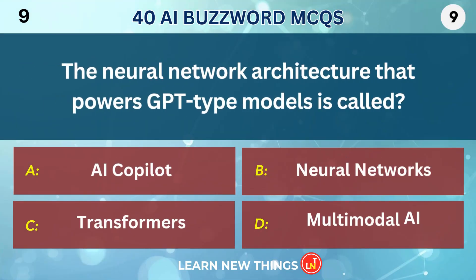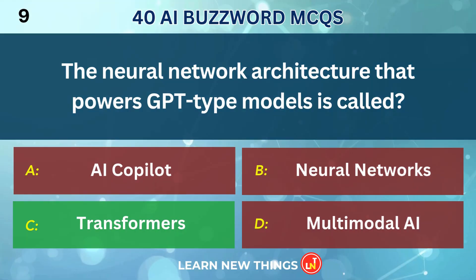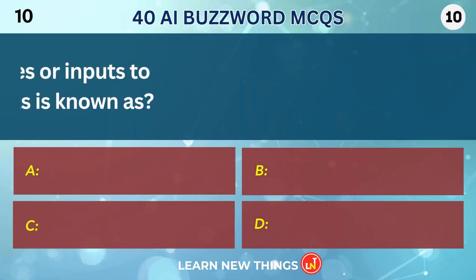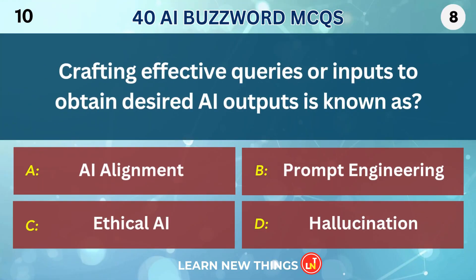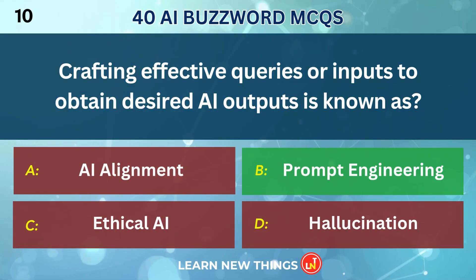The neural network architecture that powers GPT-type models is called Transformers. Crafting effective queries or inputs to obtain desired AI outputs is known as Prompt Engineering.